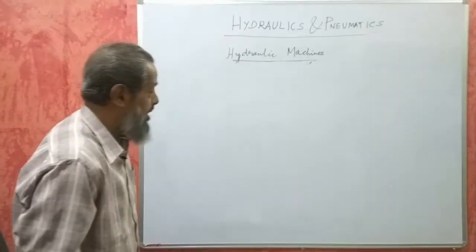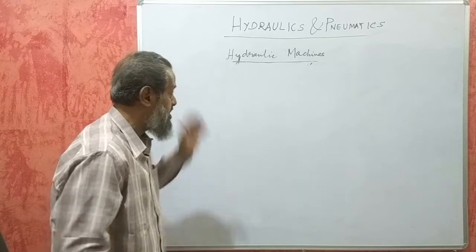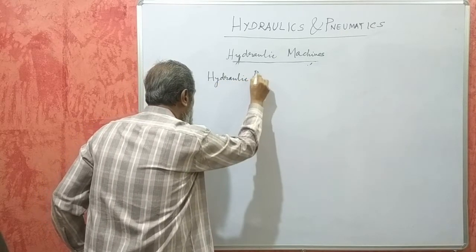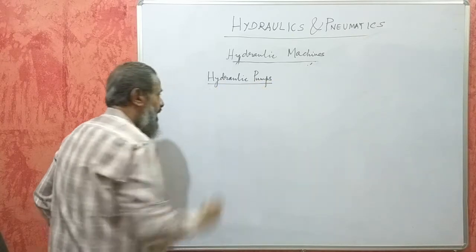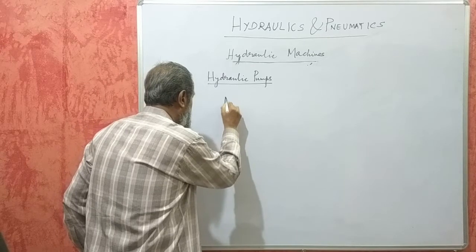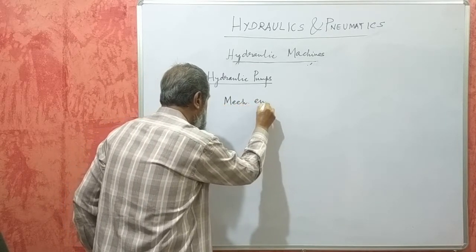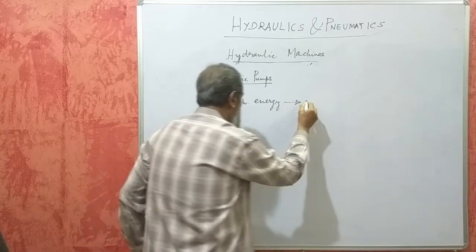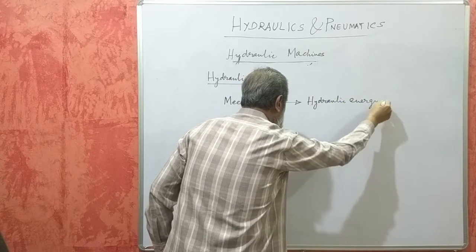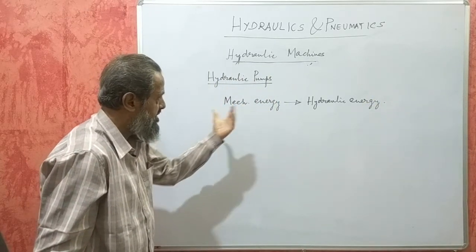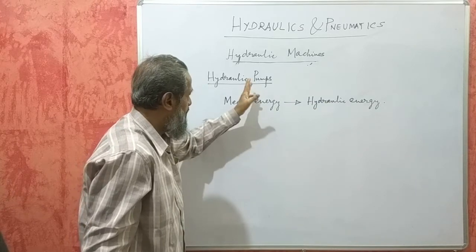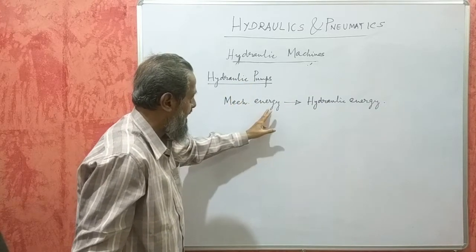Friends, we have completed our discussion on hydraulic turbines. Now we will take up hydraulic pumps. A hydraulic pump is a machine which converts mechanical energy into hydraulic energy. So it is the exact reverse of a hydraulic turbine. A hydraulic turbine converts hydraulic energy into mechanical energy, whereas a hydraulic pump converts mechanical energy into hydraulic energy.